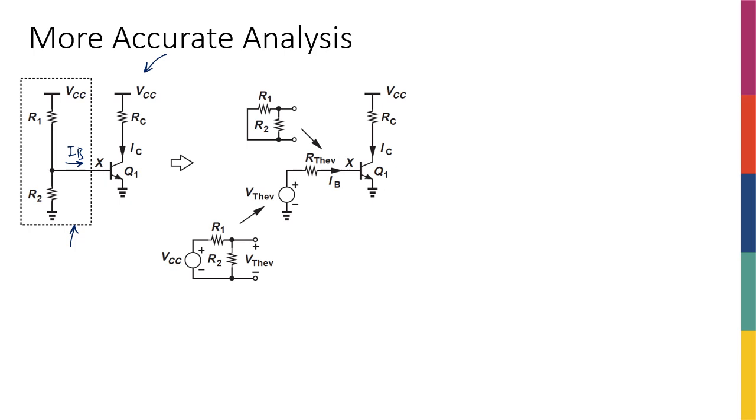So we know that for Thevenin-equivalent, we need the V-Thevenin and R-Thevenin. For V-Thevenin, what we do normally is that we do the open test. So if I assume that at this point the output of the circuit is open, then I know that this V-open circuit is going to look like, that my circuit is going to look like this. So my V-Thevenin is going to be equal to R2 over R1 plus R2 times Vcc.